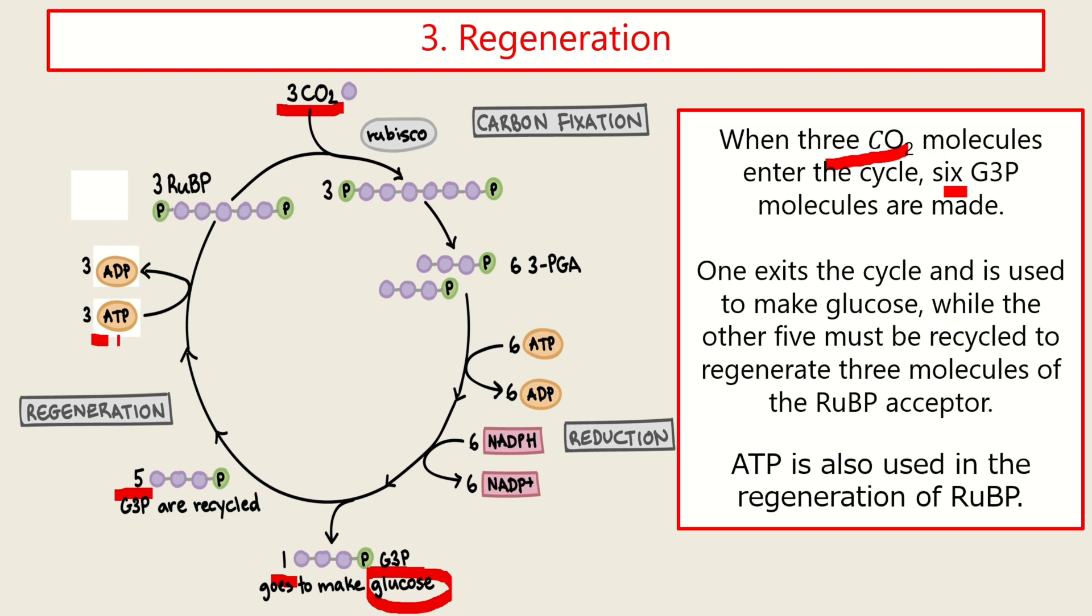In this stage, three ATP molecules are needed to convert RUBP molecules. The G3P molecules are used to regenerate RUBP.